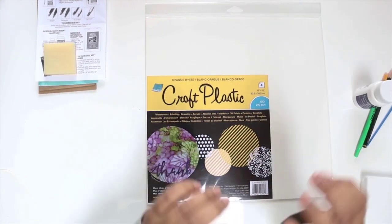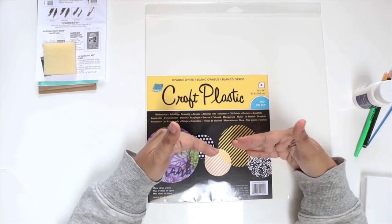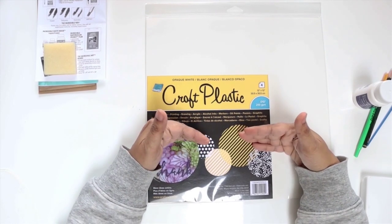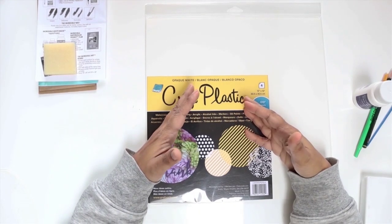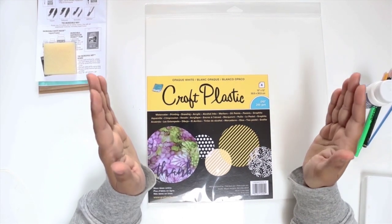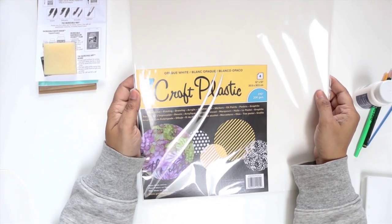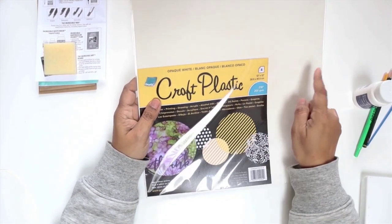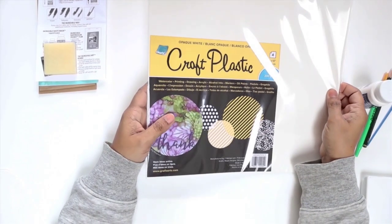Before I start with the frisket, I want to introduce you to the surface I'm using. In the past I have used liquid masks on watercolor paper. This time I'm using the opaque white craft plastic, which is 12 inch by 12 inch size. I'm going to cut it smaller.